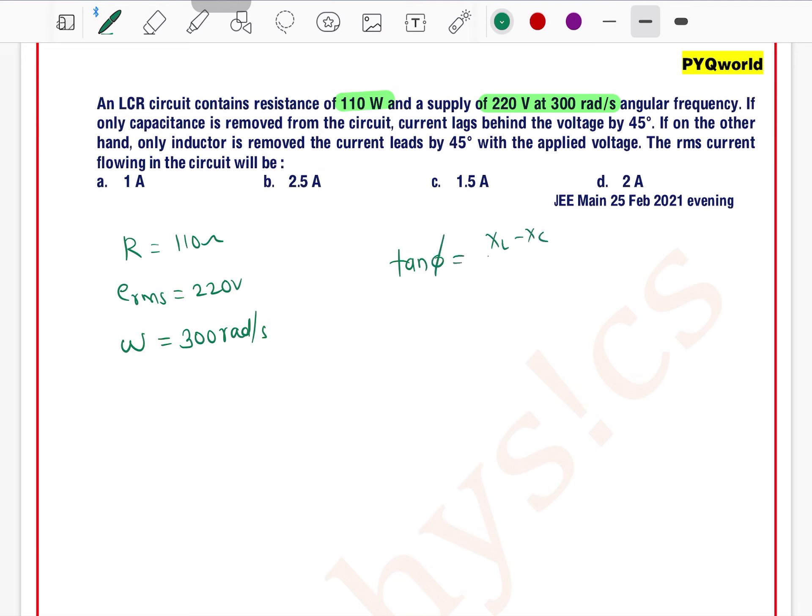See, we know that the formula for phase difference is XL minus XC divided by R, or you can write XC minus XL divided by R depending upon the situation. In the first case, if only capacitance is removed, means inductor is there. So we can use the first formula, tan phi is equal to XL by R. It's phi value of 45 degrees.